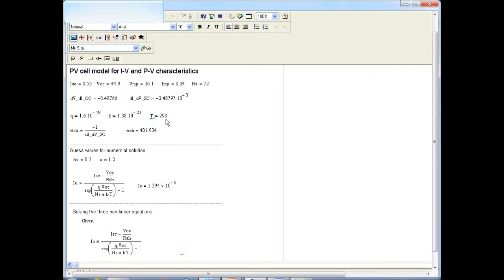Then the two estimated values, the two slopes at the open circuit condition and the short circuit condition. The constants Q and K and the operating temperature, 25 degree Celsius, which is STC or 298 Kelvin. Then the R shunt is just minus one over the dI over dV at SC.